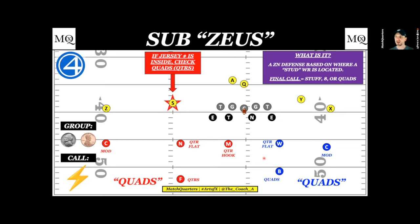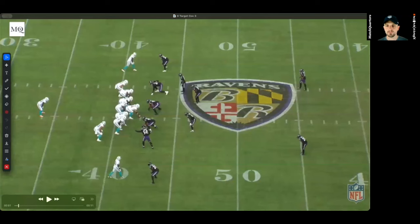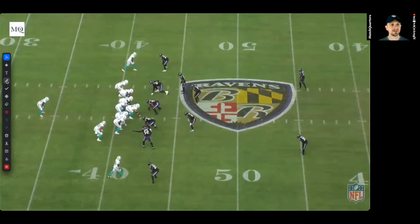What do we do when we get four-by-four? In the Fangio scheme, they do not run a lot of quarters — that's a misnomer. They are a quarter-quarter-half, half-quarter-quarter defense in their split-field system. He's a big weak-rotation guy; the system is built around weak rotation. When you put quarters on the backside, you hold that two-high shell and can play a lot of weak rotation, which muddles the waters for quarterbacks. Let's look at a clip by the Ravens, another team that runs targeted coverages, versus the Dolphins.